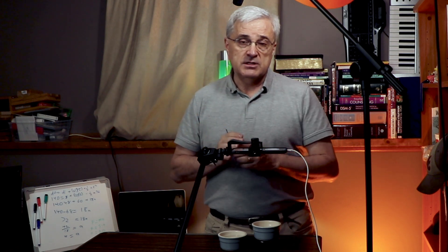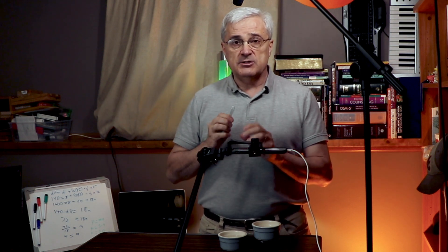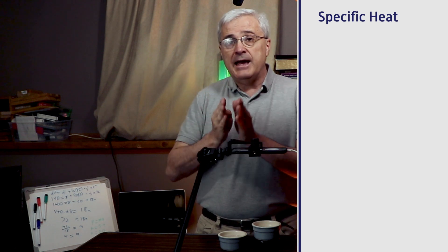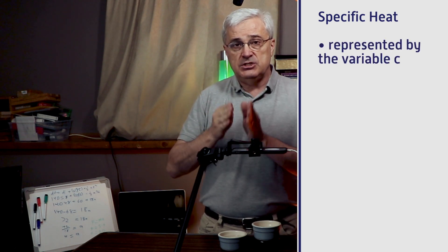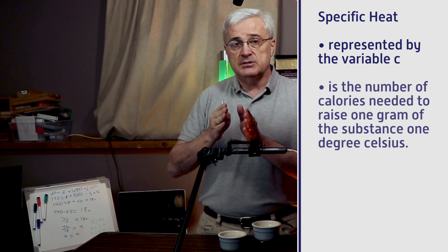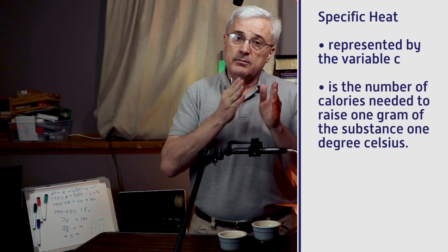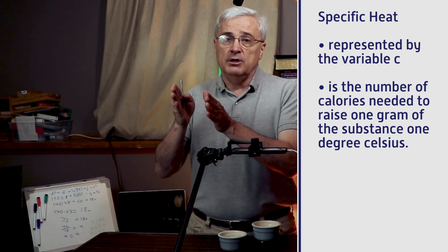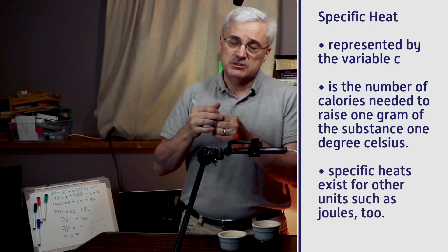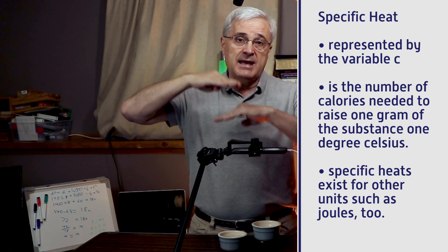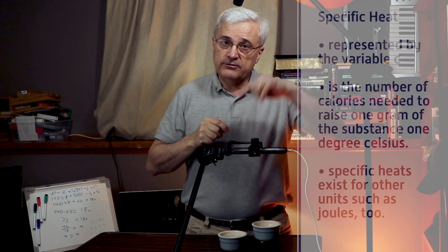We need to understand how the temperature change tells us how much energy was lost. Each substance in nature has something called a specific heat. That specific heat is the amount of energy it takes to change one gram of the substance by one degree Celsius — which is the same as one Kelvin degree, since a Kelvin degree and a Celsius degree are the same magnitude, even though they're different on the scale.